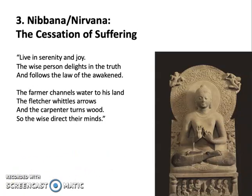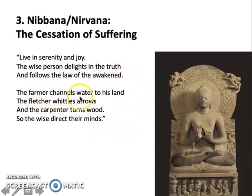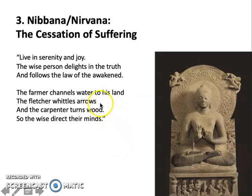Buddhism proposes that suffering can actually end, and that ending of suffering is the absolute peace of nirvana. This is a quote from one of the Buddha's sutras — the poetic utterances of the Buddha transmitted orally before being written down. 'Live in serenity and joy' — this is the promise that nirvana is defined as serenity and joy. The wise person delights in the truth. The farmer channels water to his land, the fletcher whittles arrows, and the carpenter turns wood — so the wise direct their minds.